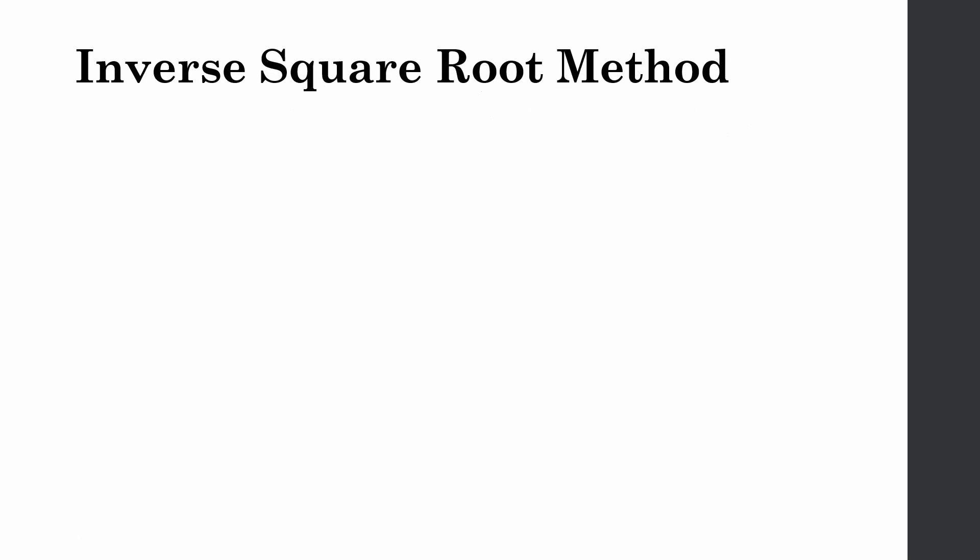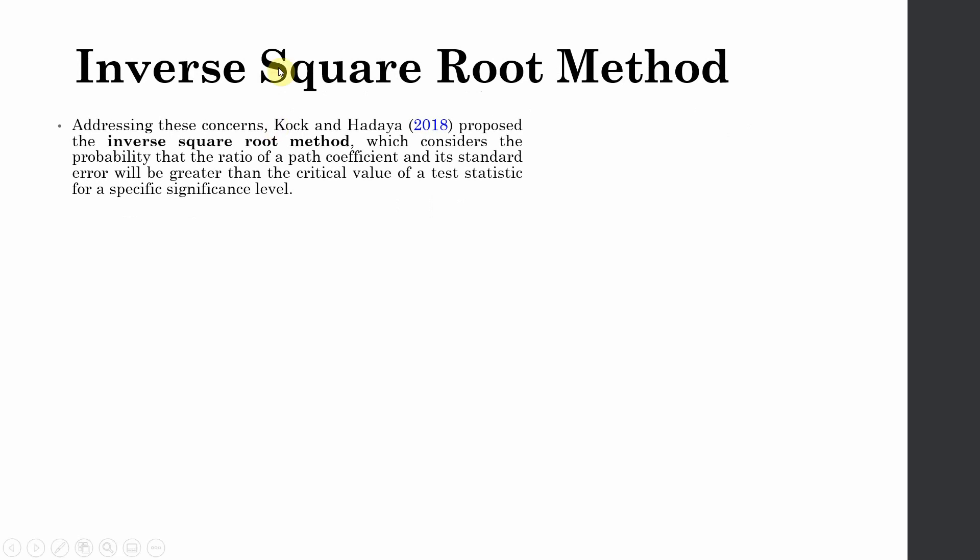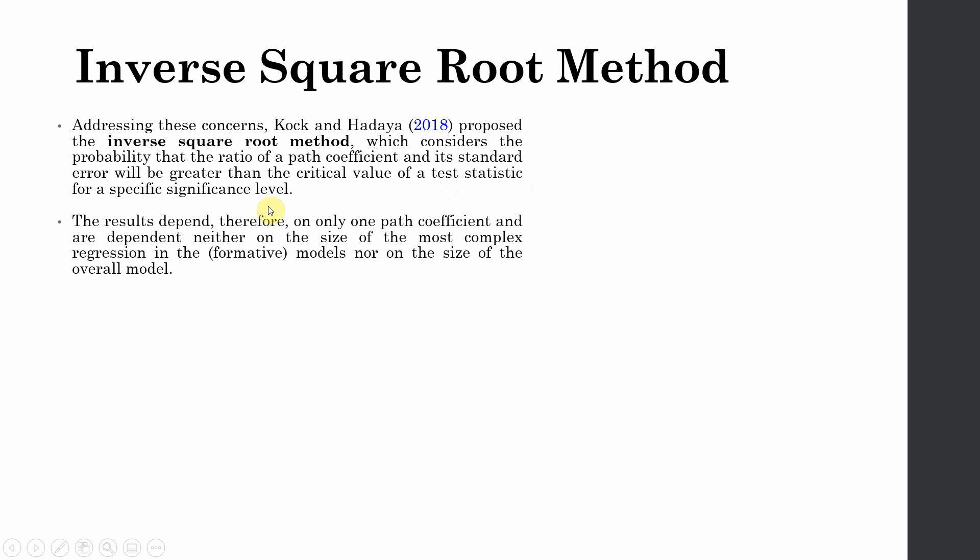In order to solve this problem, we've got the inverse square root method. Addressing these concerns, Kock and Hadaya in 2018 proposed the inverse square root method, which considers the probability that the ratio of path coefficient and its standard error will be greater than the critical value of test statistic for a specific significance level.